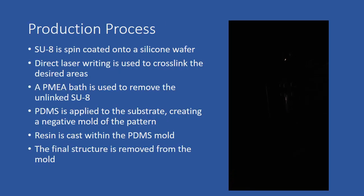The production process begins by spin coating SU8 onto a silicon wafer. Direct laser writing is used to cross-link the desired areas. A PMEA bath is then used to remove the remaining unlinked SU8 from the substrate.